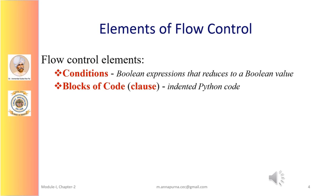Flow control statements often start with a condition and are followed by a block of code, also called a clause. Conditions are nothing but a boolean expression that gets reduced to a boolean value — either true or false. A flow control statement decides what to do based on whether its condition is true or false, and almost every flow control statement uses a condition.